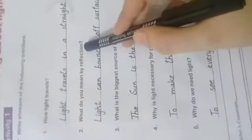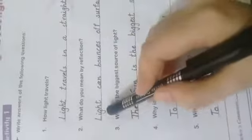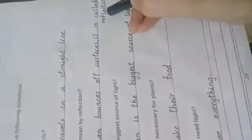How light travels? Roshni kaisay safar karti hai? Light travels in a straight line. Roshni aik seedhi line mein safar karti hai. What do you mean by reflection? Aks ka kya matlab hai? Light can bounce off surfaces. It is called reflection. Aks ka kya matlab hai na.